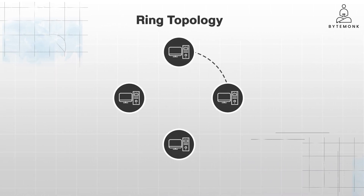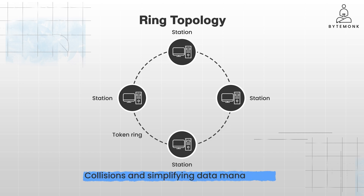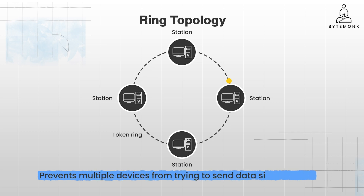A ring topology is similar to a bus network, but has a circular structure. Each device is linked to two neighbors, one on each side. Data travels around the ring in one direction, passing through each device until it reaches its destination. In most ring topologies, data travels in a single direction, preventing collisions and simplifying data management. Many ring networks use a token passing scheme — a special data packet called a token circulates around the ring, and only the device holding the token can transmit data. This ensures orderly communication and prevents multiple devices from trying to send data simultaneously.